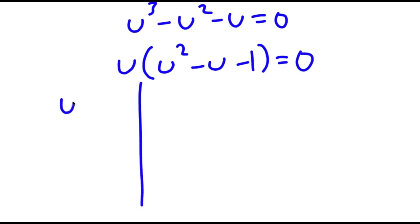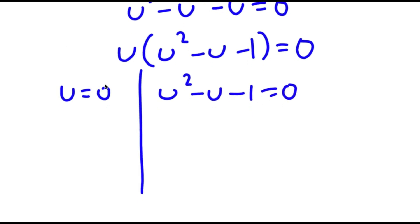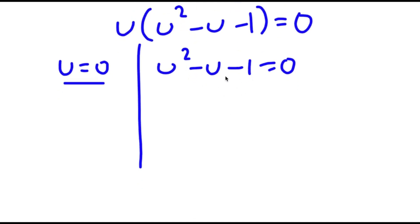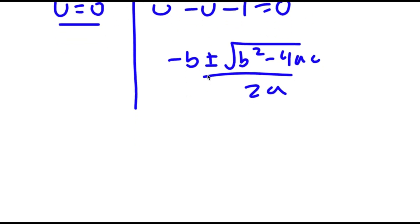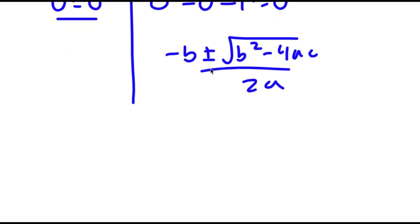I can factor out u, giving u times (u squared minus u minus 1) equals 0. This splits into two parts: u equals 0, and u squared minus u minus 1 equals 0. u equals 0 is already a solution. To solve u squared minus u minus 1 equals 0, we use the quadratic formula: negative b plus or minus the square root of b squared minus 4ac over 2a. This gives u equals (1 plus the square root of 5) over 2.